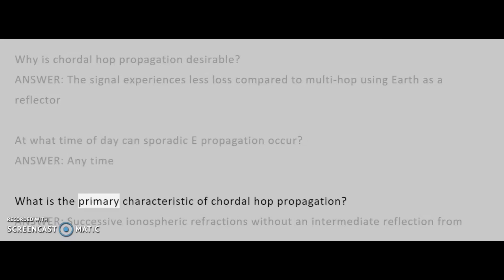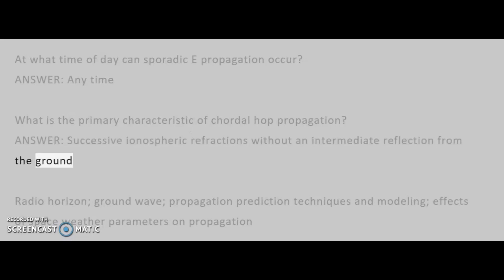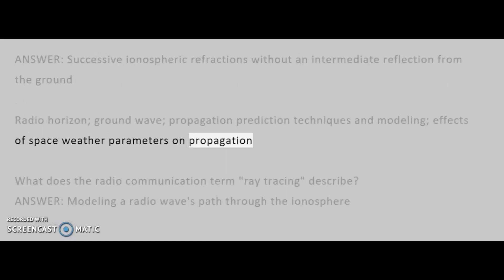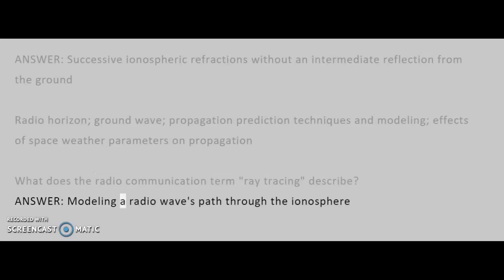What is the primary characteristic of chordal hop propagation? Answer: successive ionospheric refractions without an intermediate reflection from the ground. Topics in the next group include: radio horizon, ground wave, propagation prediction techniques and modeling, and effects of space weather parameters on propagation. What does the radio communication term ray tracing describe? Answer: modeling a radio wave's path through the ionosphere.